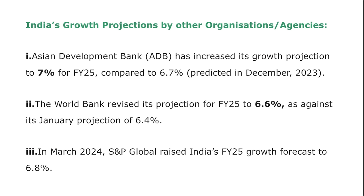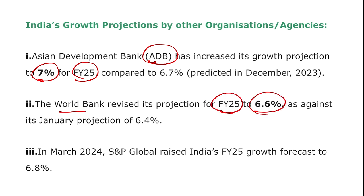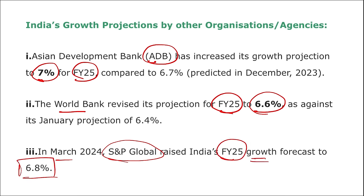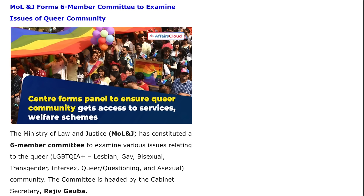Other GDP projections for India for fiscal year 2024–25: Asian Development Bank projected 7%, World Bank projected 6.6%, and in March, S&P Global raised India's FY25 growth forecast to 6.8%.